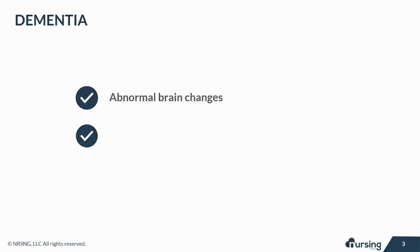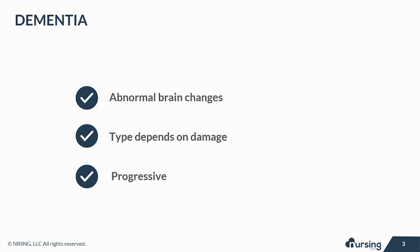So let's start by talking about dementia. When we talk about dementia, we're talking about abnormal brain changes, which means that they're not associated with the aging process — it's not normal. These changes are due to damage to brain cells, which typically causes some kind of difficulty or inability to communicate. Oftentimes what we'll see in dementia patients is a slow decline in their cognitive abilities and changes in their behavior and feelings.